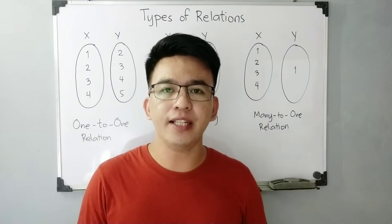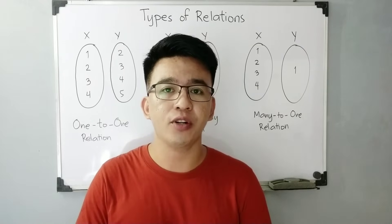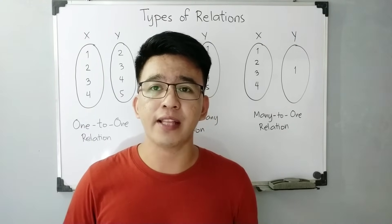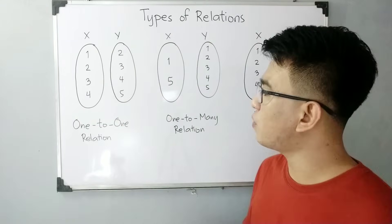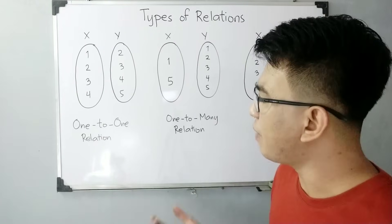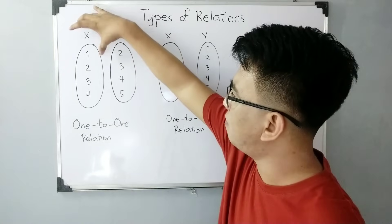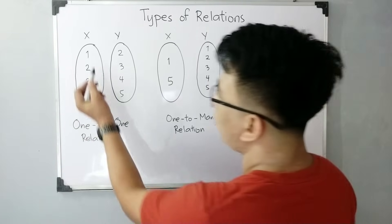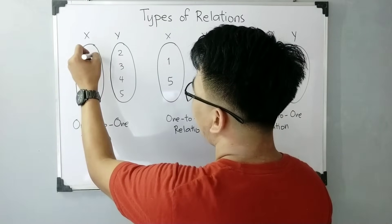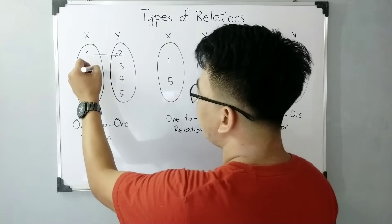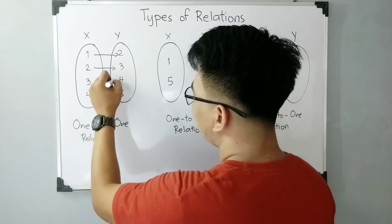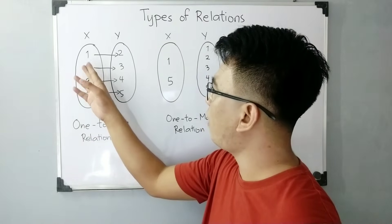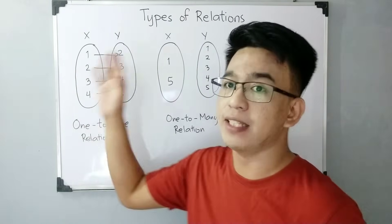Now let's have the different types of relation. We have defined what a relation is, the domain and range, and the different ways to represent a relation. Now let's go to the different types of relations. The first one is the one-to-one relation. In a one-to-one relation, if you have a set of x values and y values, each x has a single unique correspondence. For example, 1 corresponds to 2, 2 corresponds to 3, 3 corresponds to 4, and 4 corresponds to 5.